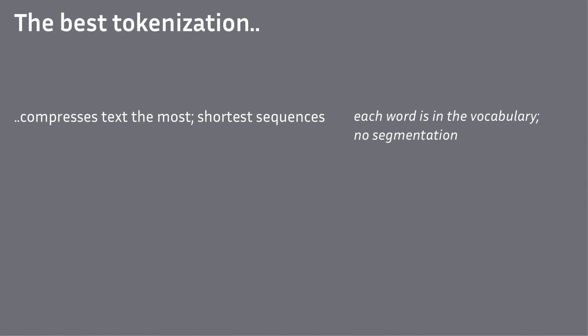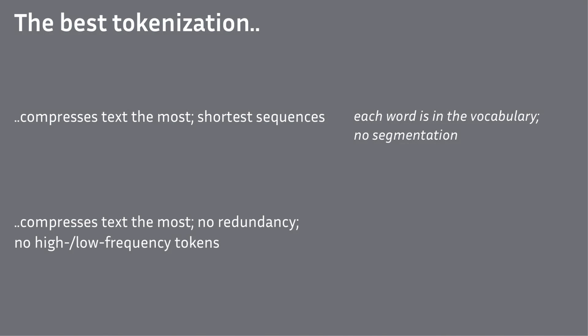But that cannot be true, because that tokenization will just say each full word is its own unit and we are back to square one. Then you can say the best tokenization compresses the most such that there is no redundancy left. Computationally, this corresponds to maximizing entropy — if entropy is highest, there is nothing left to compress.